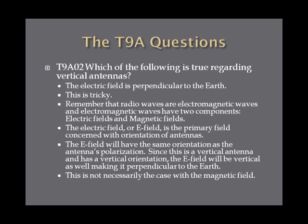Radio waves are electromagnetic waves, and electromagnetic waves have two components: electric fields and magnetic fields. The electric field, or E field, is the primary field concerned with the orientation of antennas. The E field will have the same orientation as the antenna's polarization. Since a vertical antenna has a vertical orientation or polarization, the E field will be vertical as well, making it perpendicular to the earth.